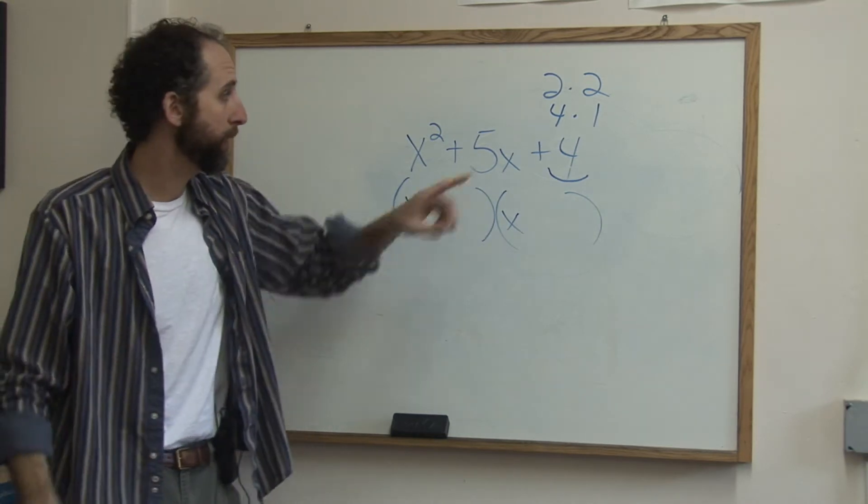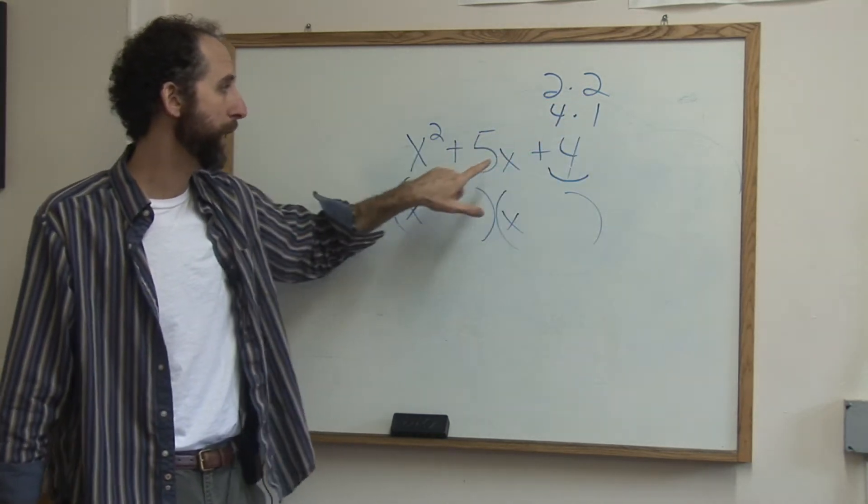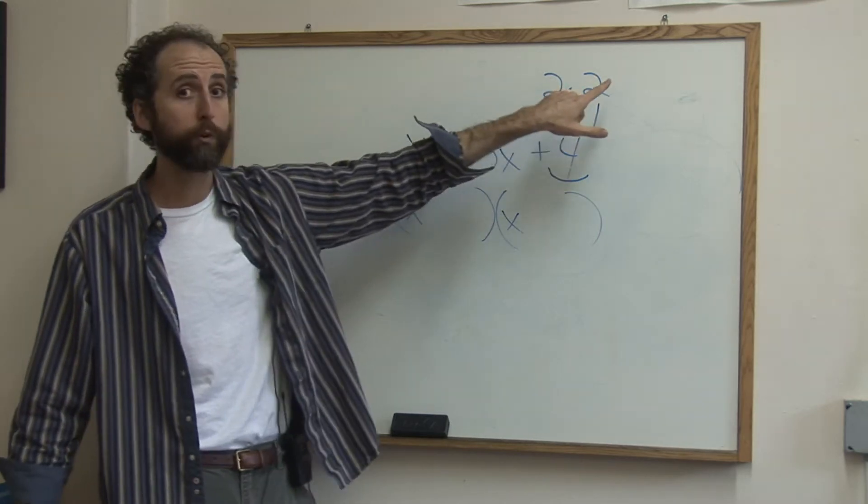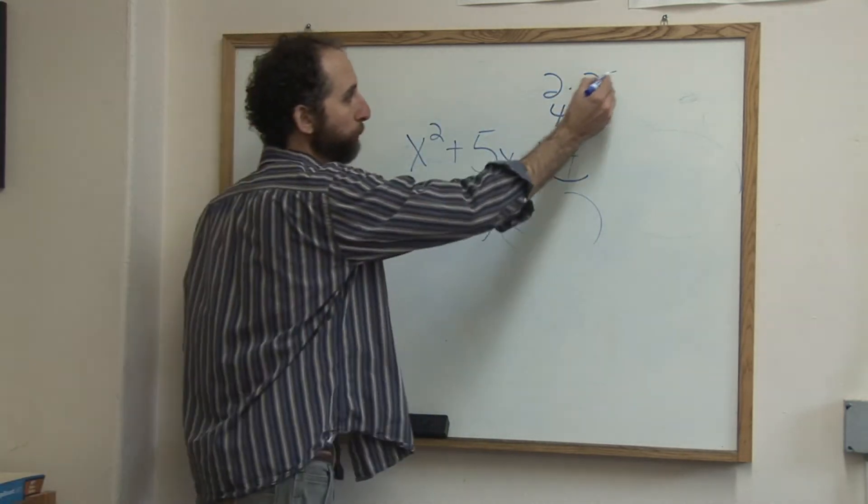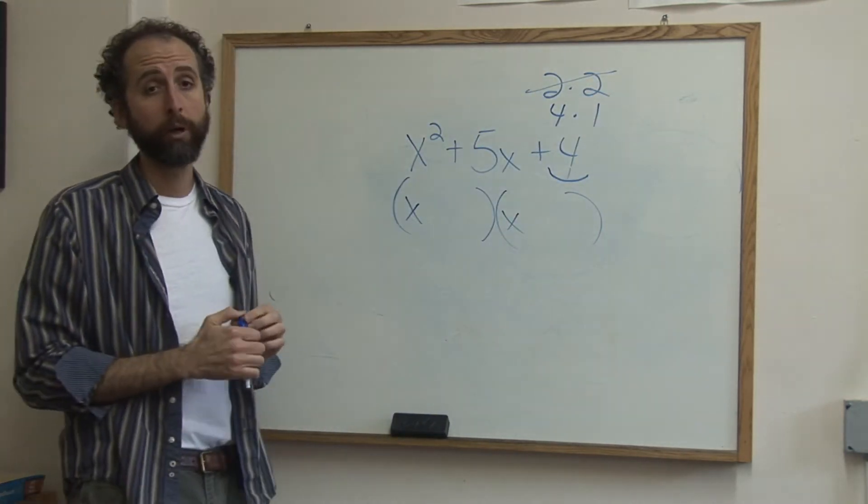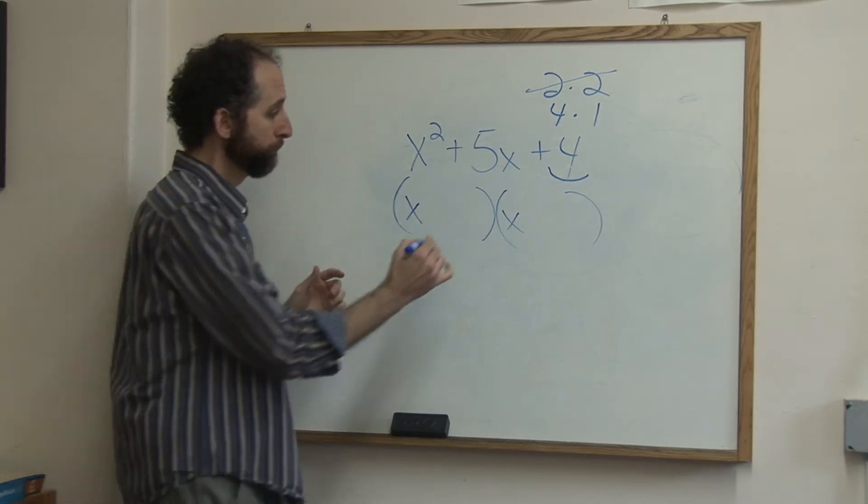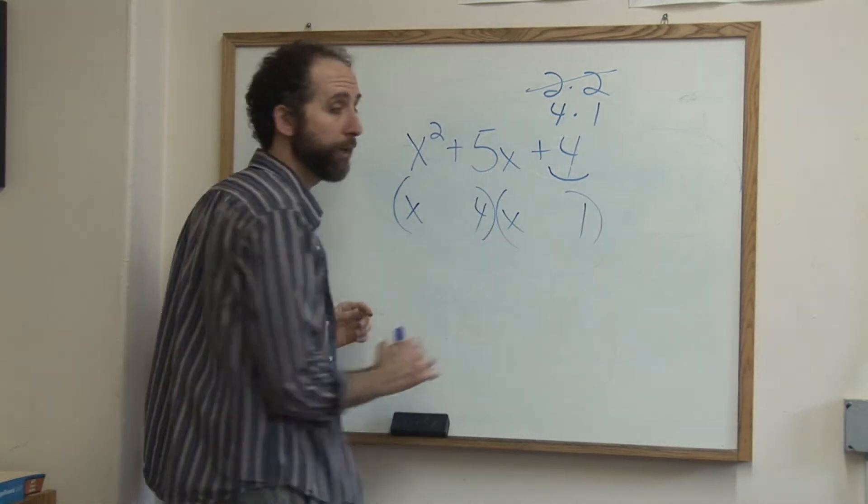Now you ask yourself which of those two can combine to give me 5. There's nothing you can do with 2 and 2 to get 5, so that's out. 4 and 1 work. 4 plus 1 is 5. So you're going to put a 4 here and a 1 here.